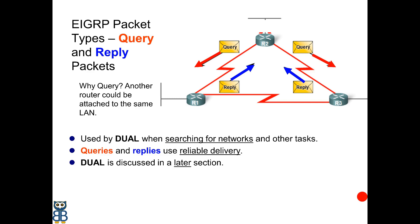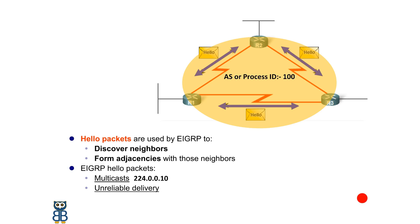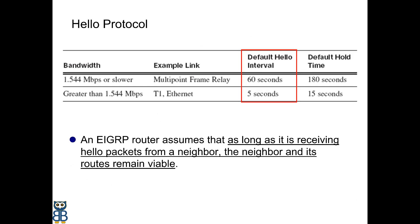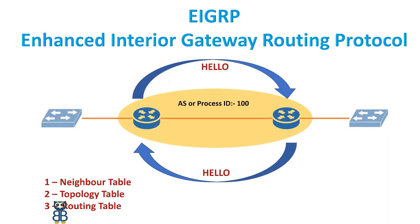EIGRP forms neighbor relationships, or adjacencies, with other routers in the same autonomous system by exchanging hello packets. Routers share routing information after forming adjacencies. Hello packets are sent as multicast to the address 224.0.0.10. By default, EIGRP hello packets are sent every 5 seconds, and every 60 seconds on slower connections. Once the router has discovered its neighbors and formed adjacencies, it will prepare and maintain three tables based on the data received.